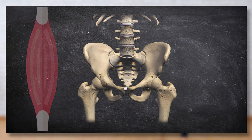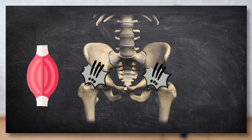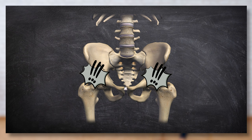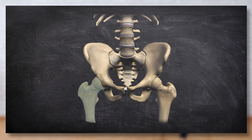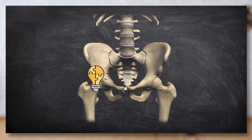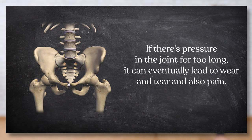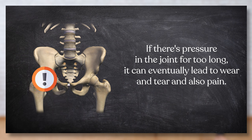When the muscular fascial tissues contract, they pull on the bone to which they are attached — the femur is pushed into the hip socket. This creates pressure in the joint, and it's super important that you release the tension. If there's pressure in the joint for too long, the cartilage and the joint in general are not being taken care of properly, which eventually leads to wear and tear.